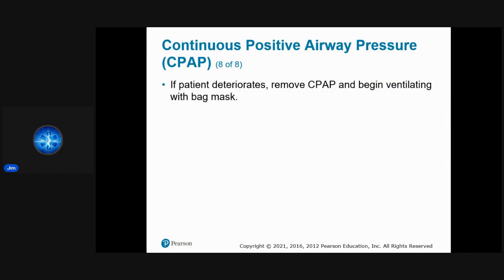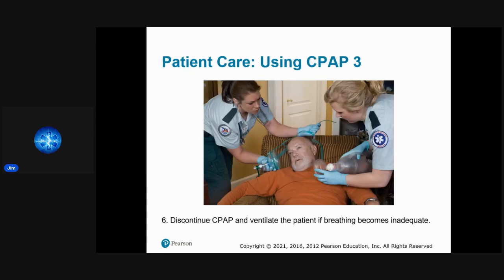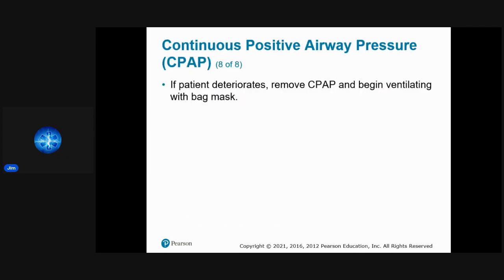If the patient starts to deteriorate — blood pressure drops or they're not tolerating the mask — remove the CPAP and begin BVM ventilation. Also remove it if they go unresponsive or become altered at any point.